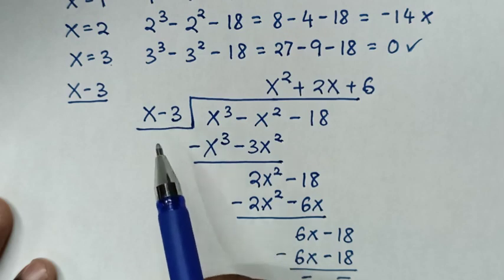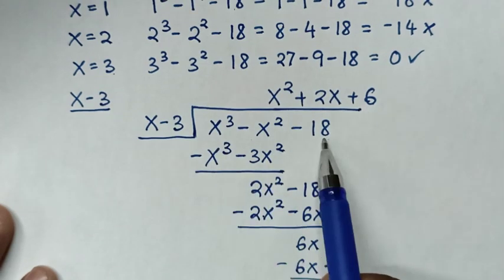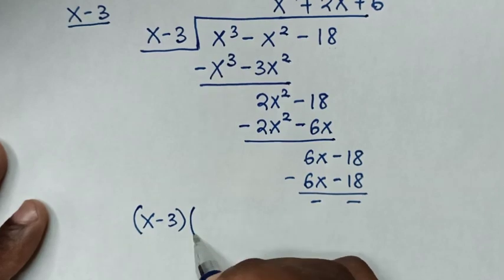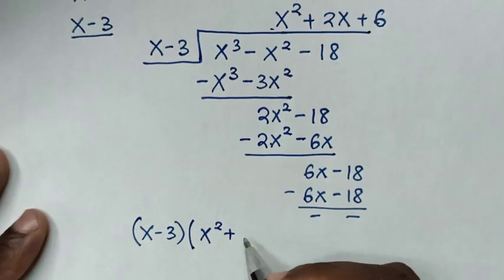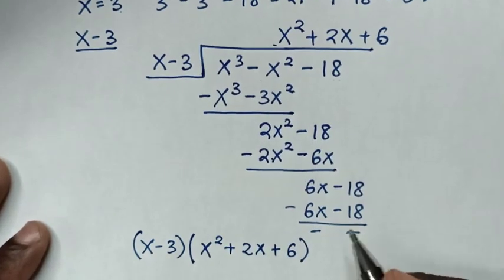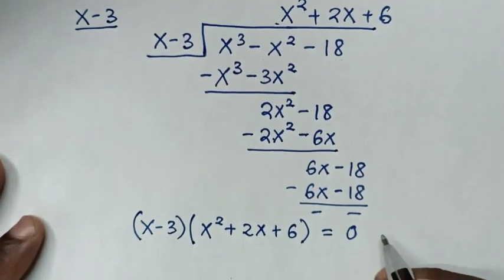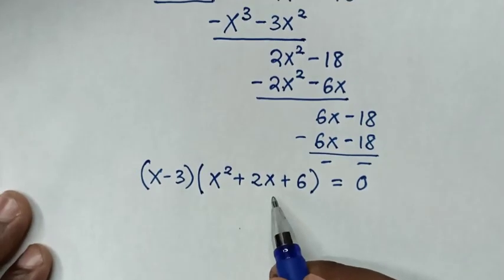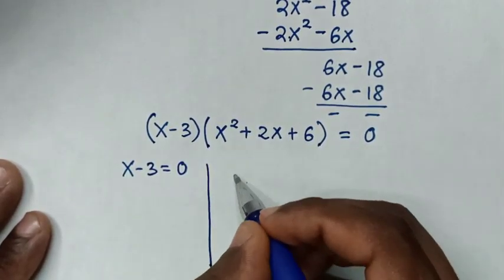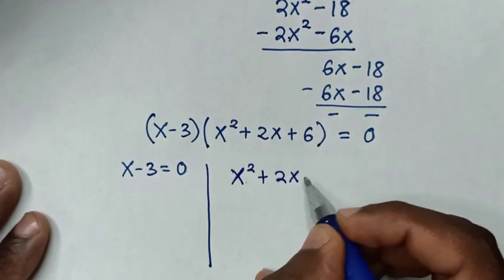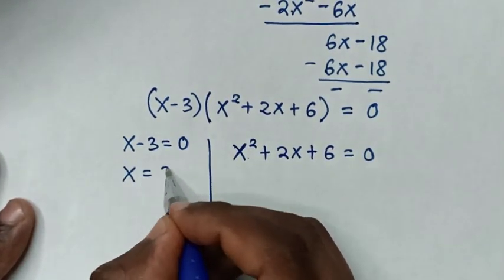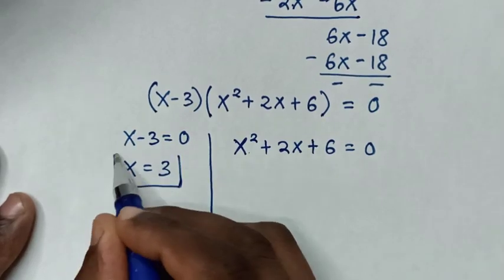Therefore this linear equation times this quadratic equation gives the cubic equation. So the cubic equation factors as (x minus 3)(x² plus 2x plus 6) equals 0. From here we have two solutions: x minus 3 equals 0, giving x equals 3 as the first real solution.